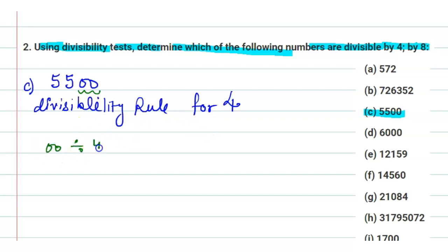Then the whole number is divisible by 4. Since 00 is divisible by 4, we can say that 5500 is also divisible by 4.